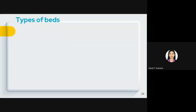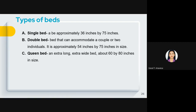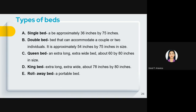Now let us discuss the types of beds. A single bed is approximately 36 by 75 inches, good for one person. A double bed can accommodate a couple or two individuals. A queen bed is extra long and extra wide, about 60 by 80 inches, also good for couples or two individuals. A king bed is extra long and extra wide, about 78 by 80 inches, good for a family with one child.